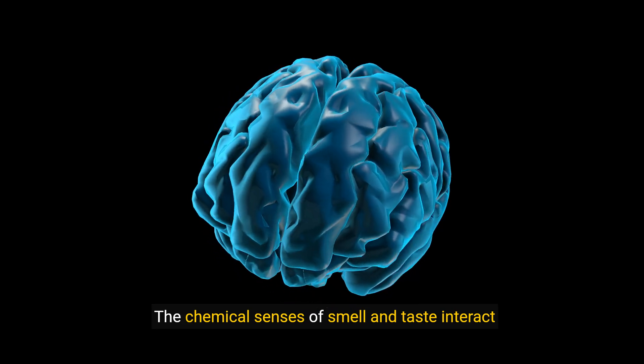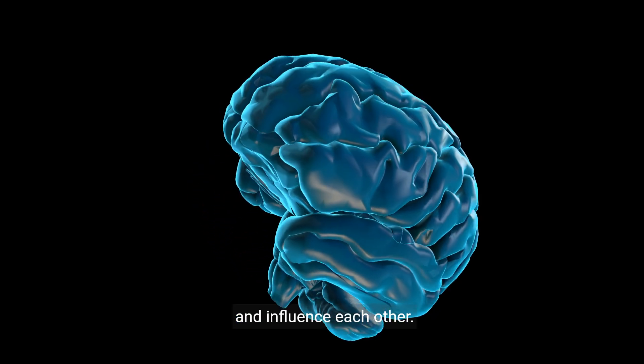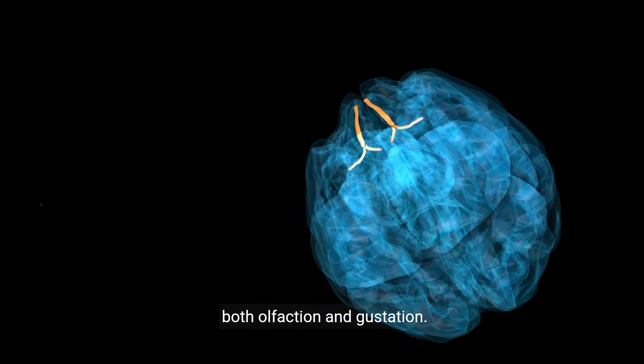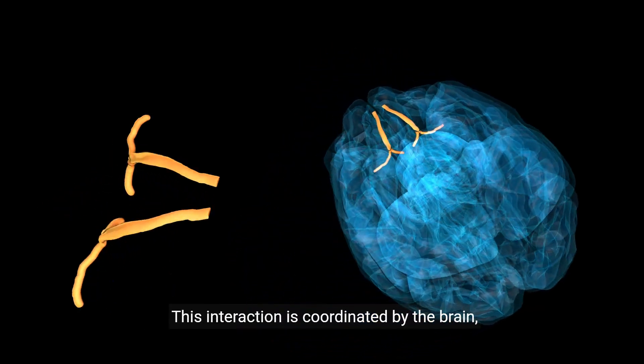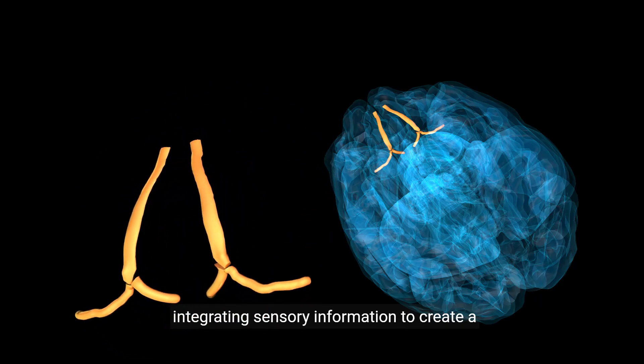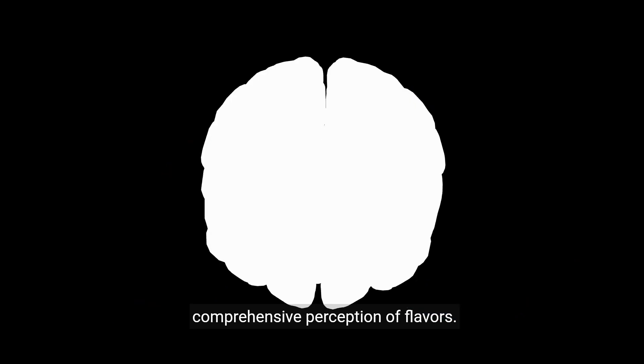The chemical senses of smell and taste interact and influence each other. For example, flavor perception is a combination of both olfaction and gustation. This interaction is coordinated by the brain, integrating sensory information to create a comprehensive perception of flavors.